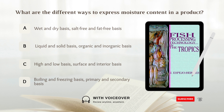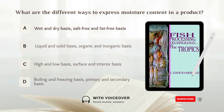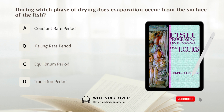What are the different ways to express moisture content in a product? A. Wet and dry basis, salt-free and fat-free basis. B. Liquid and solid basis, organic and inorganic basis. C. High and low basis, surface and interior basis. D. Boiling and freezing basis, primary and secondary basis. Answer: A. Wet and dry basis, salt-free and fat-free basis.